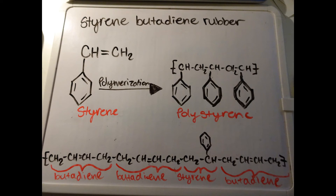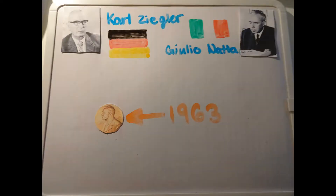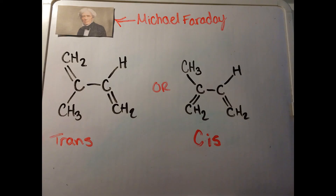Styrene butadiene rubber served as an excellent substitute for natural rubber. In 1953, Karl Ziegler in Germany and Giulio Natta in Italy further refined the production of synthetic rubber by adding a catalyst. They won a Nobel Prize in 1963 for their efforts. Through Ziegler and Natta, it was realized that, depending on the catalyst used in production, you could determine whether the rubber would be cis or trans.